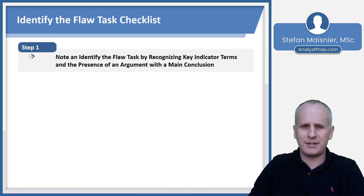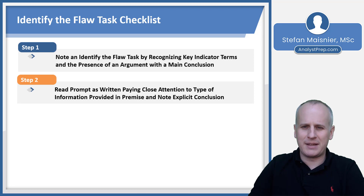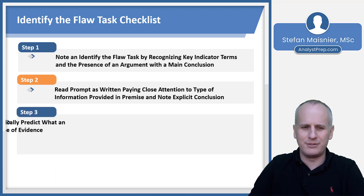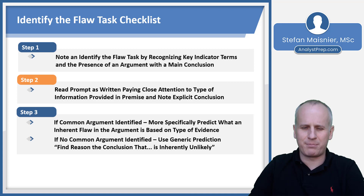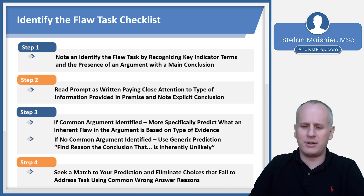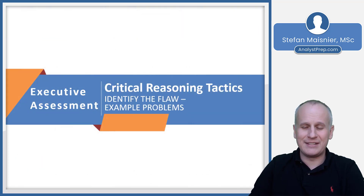The checklist for identify-the-flaw tasks: first, identify the task by recognizing key indicator terms and the presence of an argument with a main conclusion. Then read the prompt, paying close attention to the type of information in the premise, and note the explicit conclusion. If you can identify a common argument type, you'll more specifically predict an inherent flaw. If you can't identify a common argument, use the generic prediction: find a reason that the conclusion is inherently unlikely. Then seek a match to your prediction, eliminating wrong answers that fail to address the task using your common wrong-answer reasons.